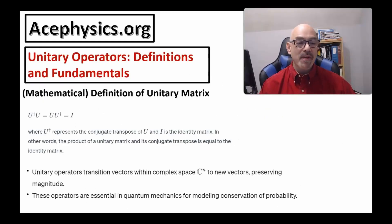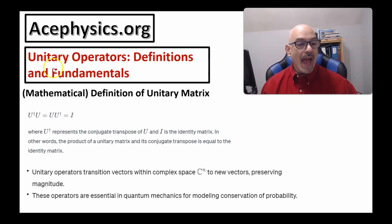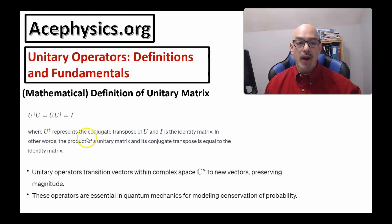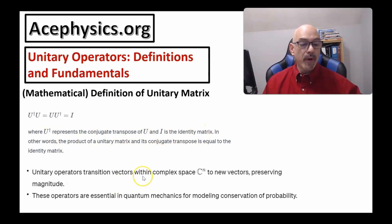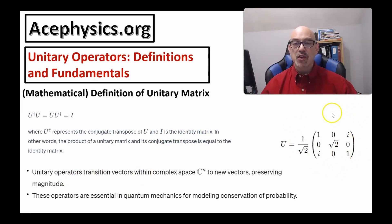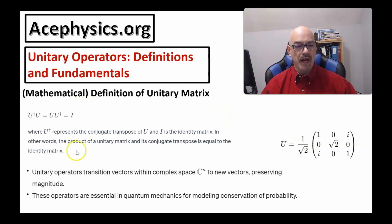The mathematical definition of a unitary operator: any matrix that satisfies the condition U dagger U equals U U dagger equals the identity matrix is a unitary operator. U dagger represents the conjugate transpose of U, and I is the identity matrix. Unitary operators transition vectors within a complex space CN to new vectors preserving the magnitude.